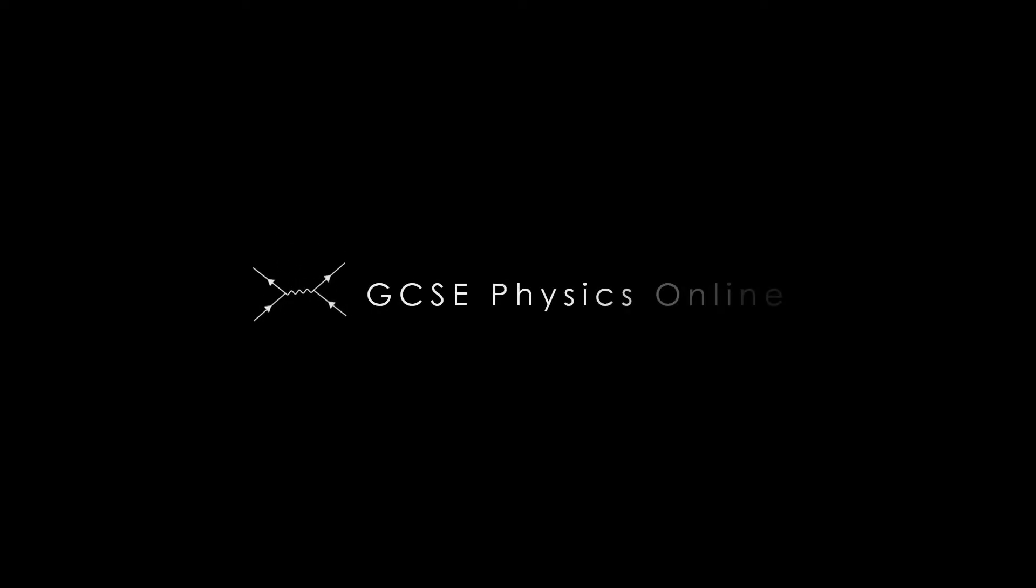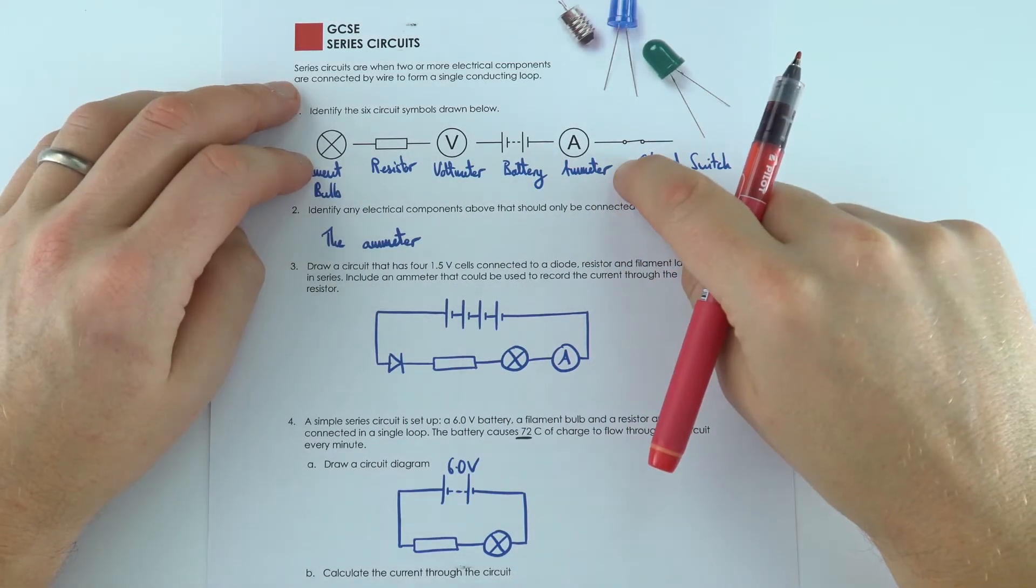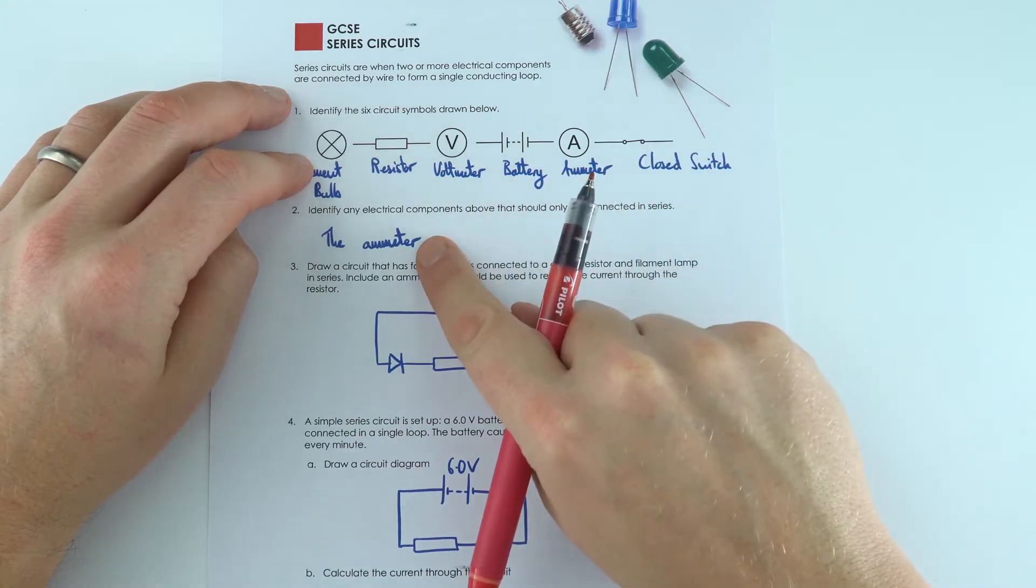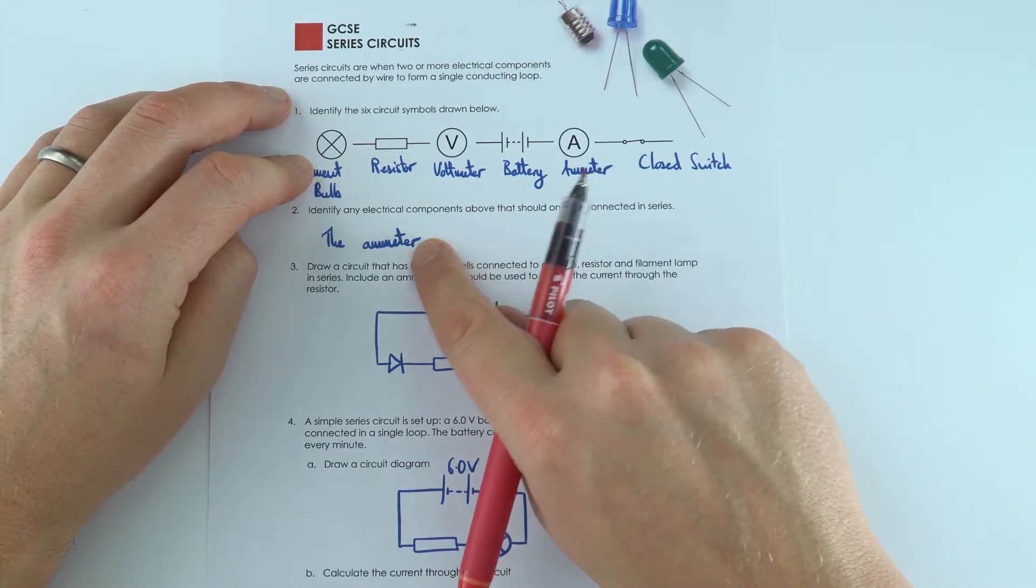So by looking at series circuits, we revised some of the common circuit symbols, including the fact that an ammeter always has to go in series, never in parallel.